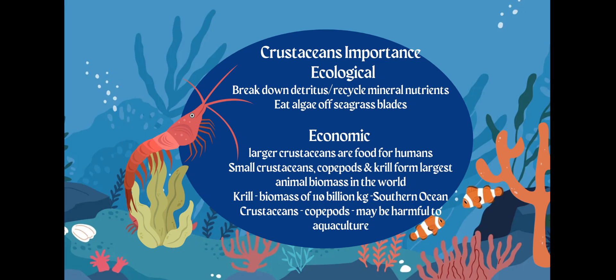Crustaceans are also going to eat algae off seagrass blades, which is important for the seagrass because the algae covers it and takes sunlight energy away. Therefore, the seagrass cannot do photosynthesis if it's covered in algae. Crustaceans will actually clean off that algae, and then of course the seagrass will be able to do photosynthesis, allowing for an increase in biomass. Remember — more producers, more biomass, because they're going to control how many organisms can be in the environment.